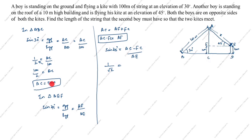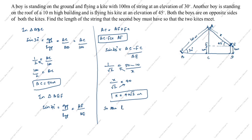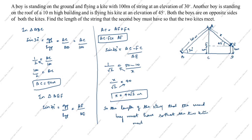AC we already calculated as 50 meters, and FC is 10 meters. So AF = 50 minus 10 = 40. Therefore, 1 over root 2 equals 40 over x. Cross-multiplying: x divided by root 2 equals 40, so x equals 40 root 2 meters. The length of string the second boy must have so that the two kites meet is 40√2 meters.